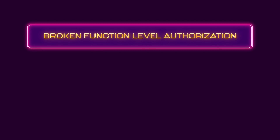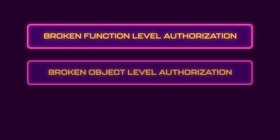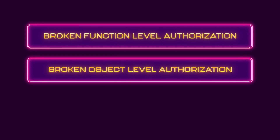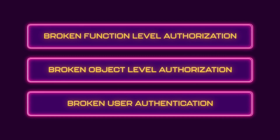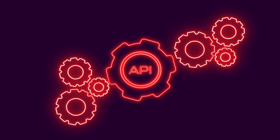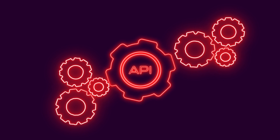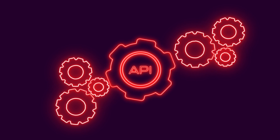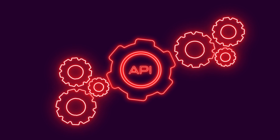So keep HTTP methods and the supported API endpoints in mind, as well as proper abstraction for API functions when developing your API. If we combine broken function level authorization with the previously mentioned broken object level authorization or even broken user authentication, your API might really be set up for failure — easy ways to gain intelligence on how your API works and then manipulate the data in the API.